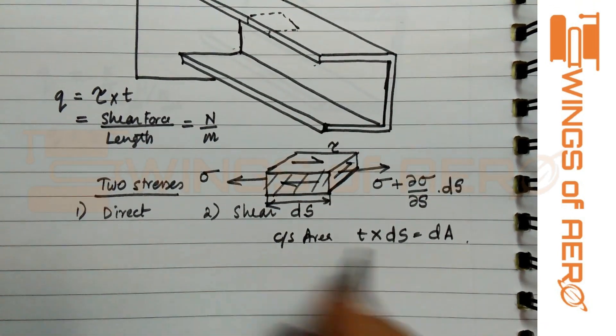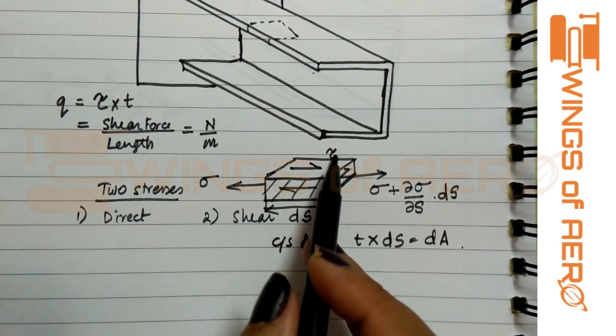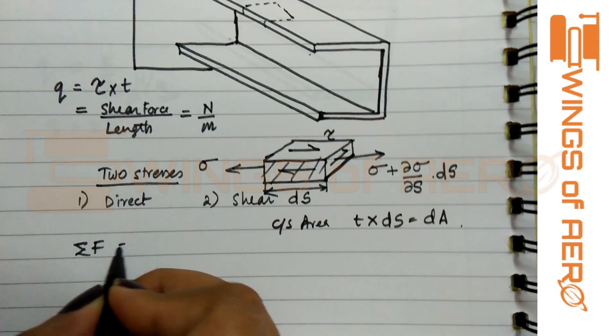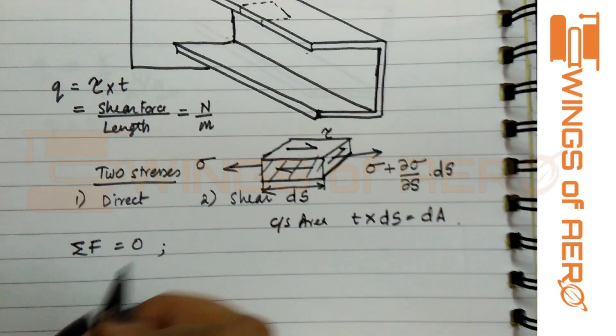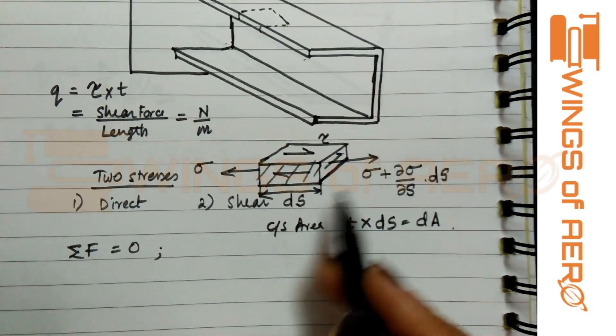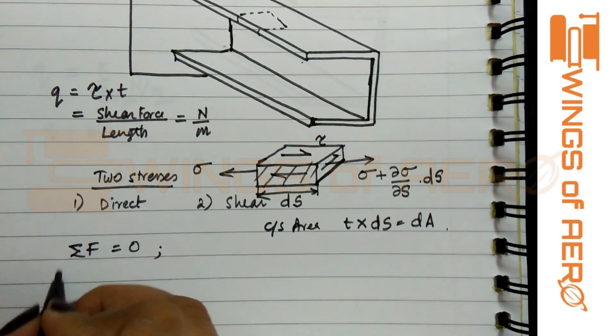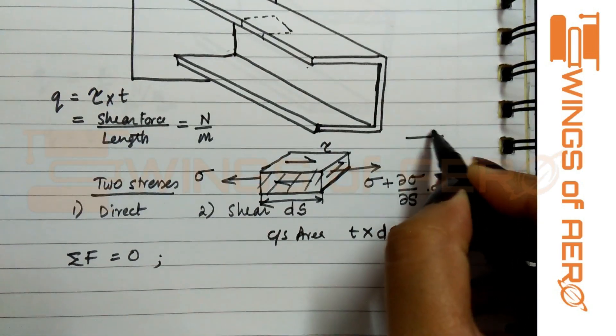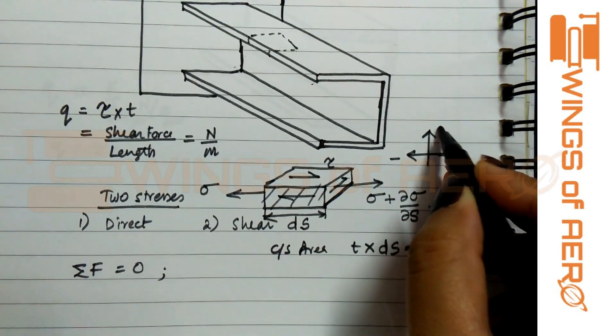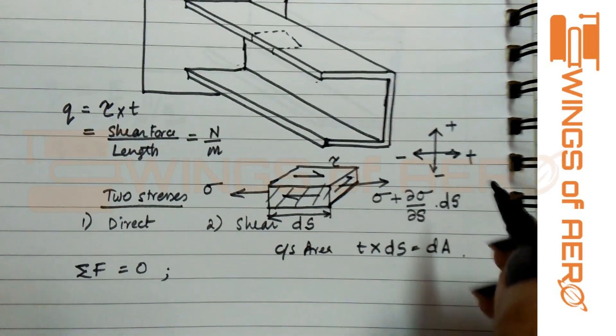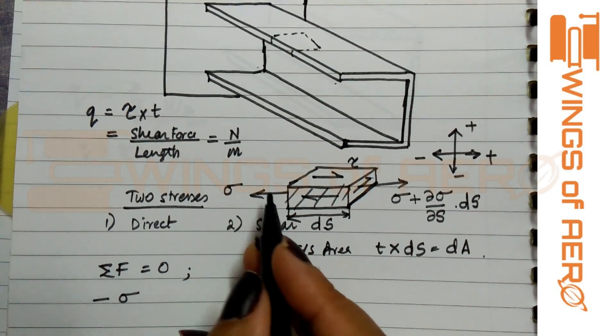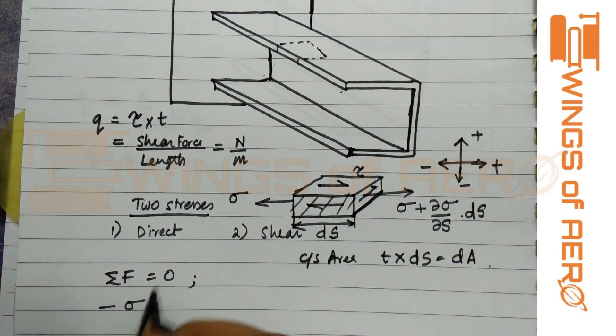Now we are creating this tau and sigma. As per the static equilibrium equation, we know that summation of forces equals zero. If we create a force at these two points, we are going to convert these stresses into force. How can we convert stresses into force? Here we know that this side is negative and this side is positive—upward positive and downward negative.